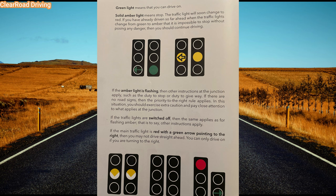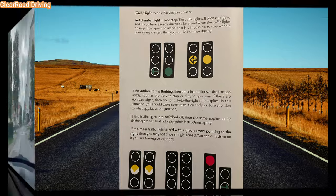Fifth, flashing or switched-off light. In these cases, other traffic rules apply at the junction, such as duty to give way, duty to stop, or priority to the right, if there are no traffic signs on the intersection. Sixth, arrow or filter lights — these are used to filter vehicles traveling in a specific direction. We will demonstrate all the above rules using videos.